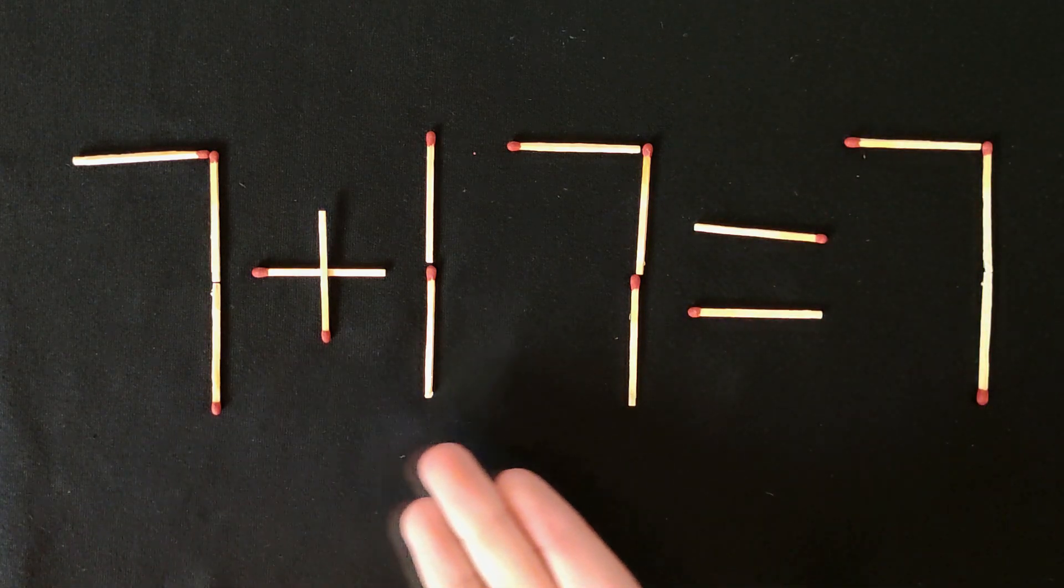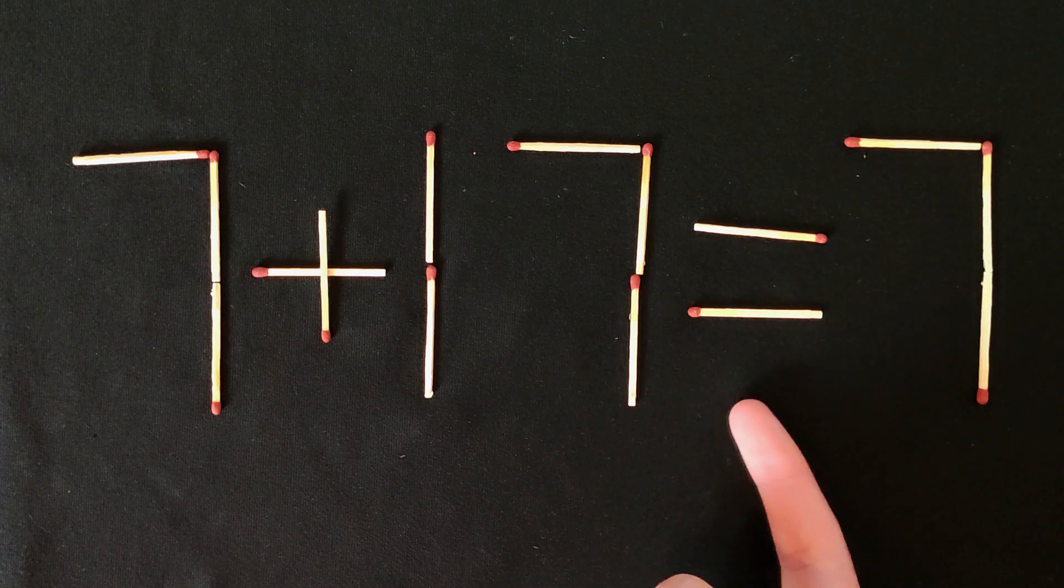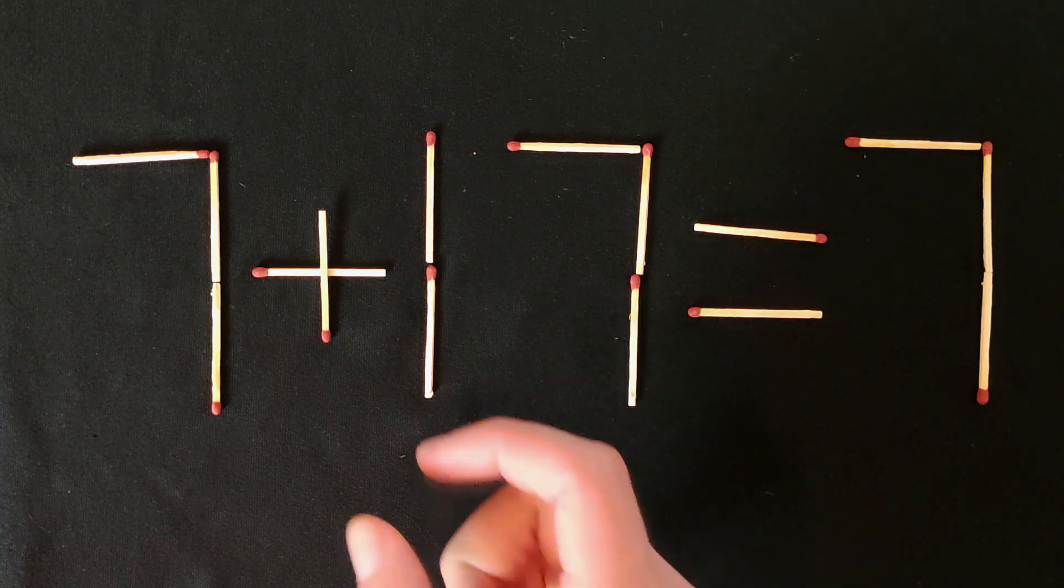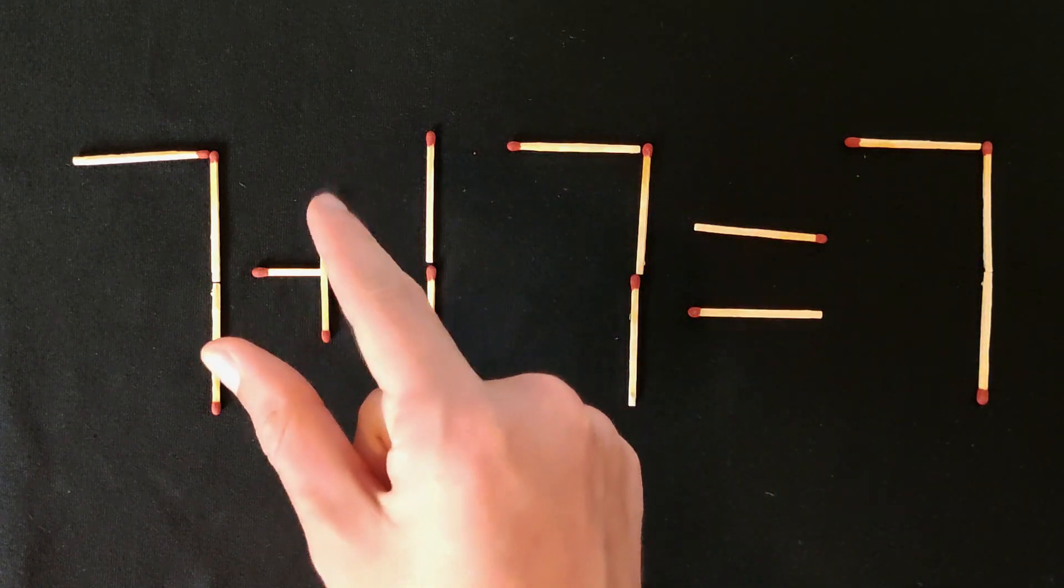Hi everybody, today we have a puzzle like this. 7 plus 17 equals 7. That's wrong. We need to rearrange one match so that this equation is correct.